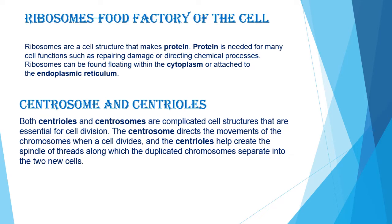Now let us study about centrosome and centrioles. The centrosome also does not have a membrane around it. It is found only in animal cells and the cells of some lower plants. It lies near the nucleus and appears as a rounded mass containing two small micro-cylindrical bodies called centrioles. They lie at right angles to each other, and during cell division they migrate to the opposite poles of the cell. The main function of the centrosome is that it forms spindle fibers at the time of cell division, and basal bodies of cilia and flagella develop from centrioles.